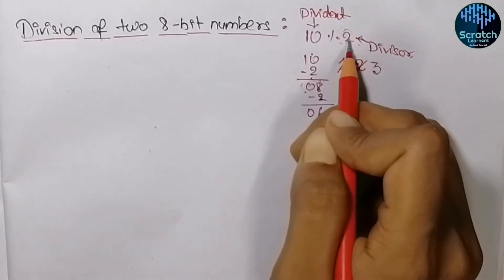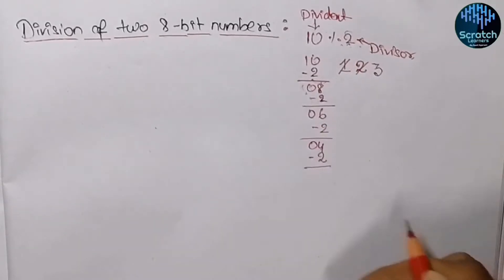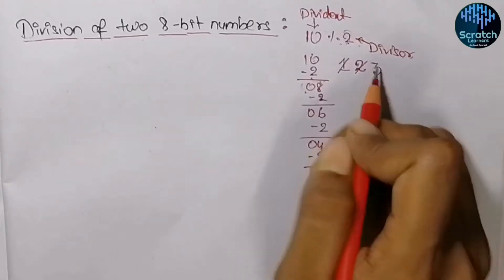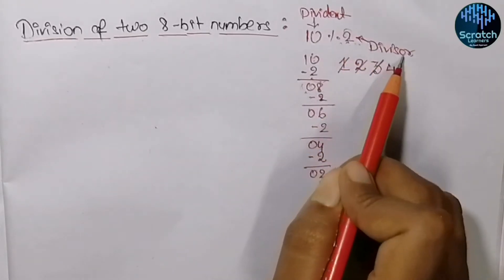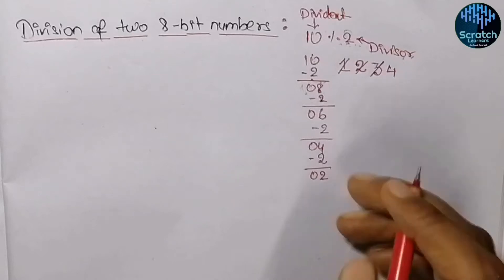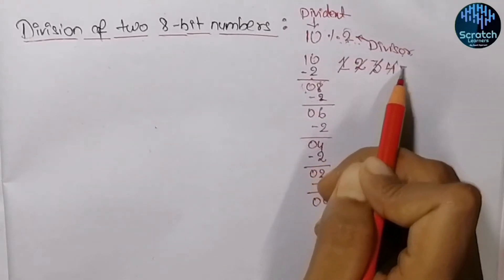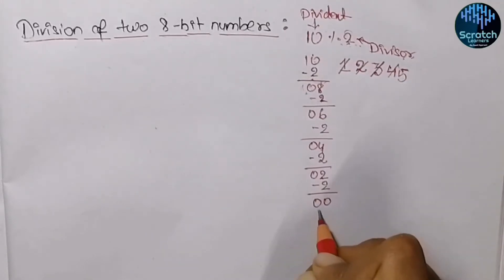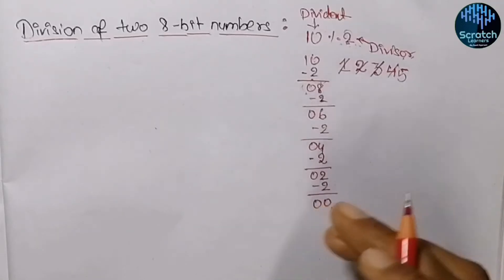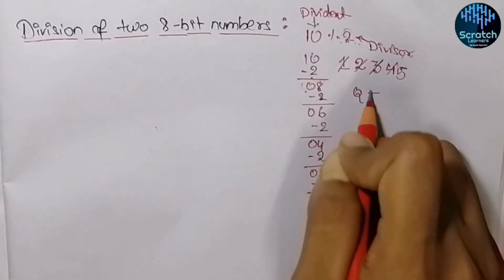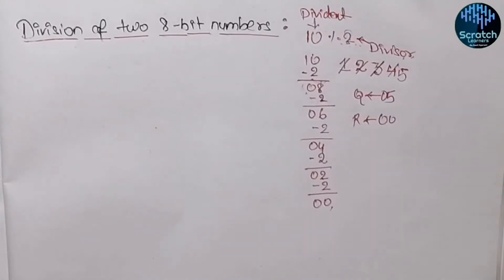04 hex is compared with the divisor 2 — 4 is greater than 2, so we subtract again to get 02 hex and the quotient is incremented to 4. Now 02 equals the divisor, so it can be divided once more. We subtract by 2 and get 00 hex, and the quotient is incremented to 5. The remainder is now 00 hex, which is smaller than the divisor, so it cannot be divided any further.